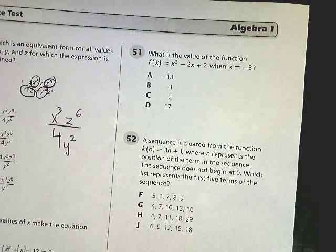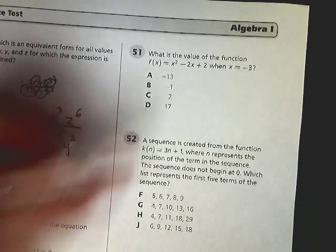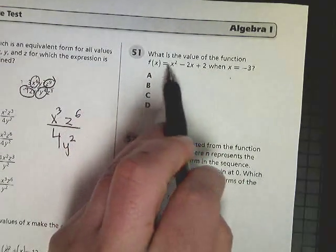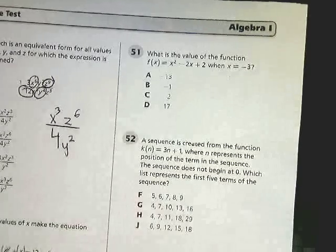If you watch the video for 50, 51 is very similar to how I solved it when I used substitution. Because that's really all they're asking you to do here. They want to know what this function is, x squared minus 2x plus 2, when it's equal to negative 3.